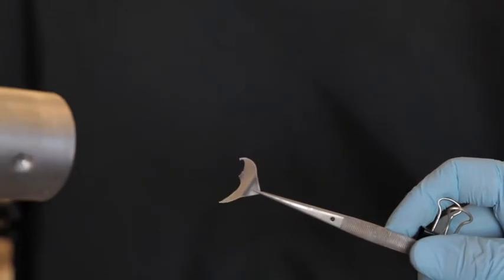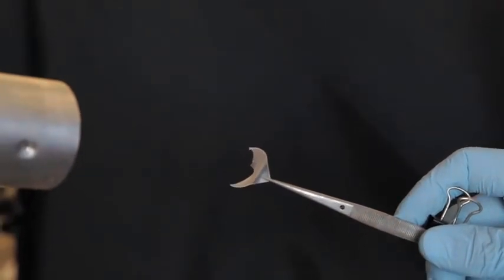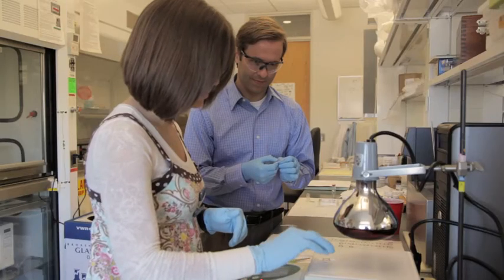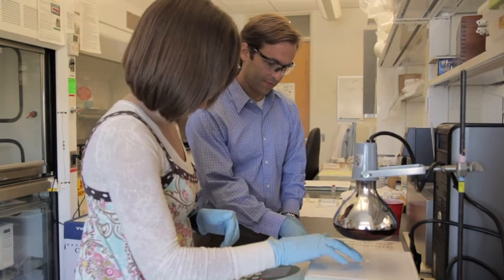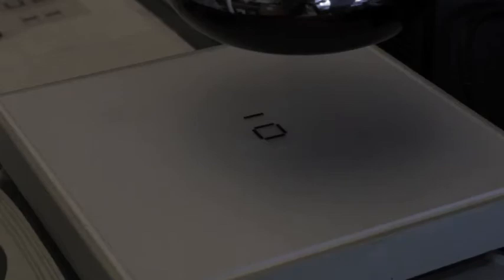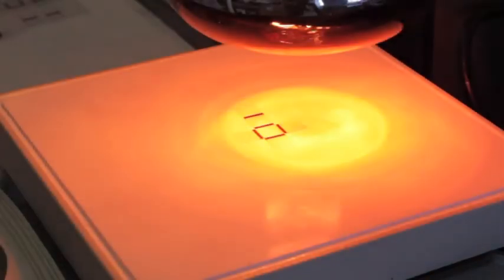The polymer sheets shrink when heated above the glass transition temperature. When we place these sheets under a lamp, the black ink from the printer selectively absorbs the light and converts it into heat locally in the hinge regions.